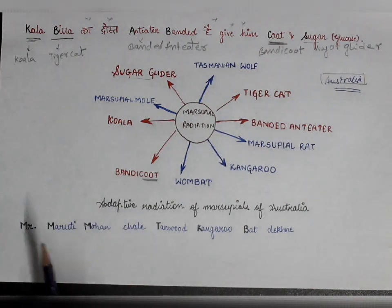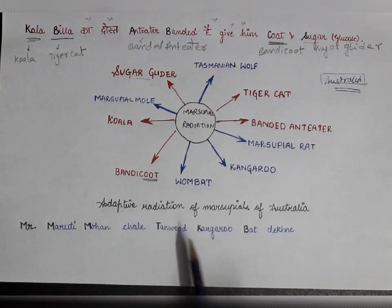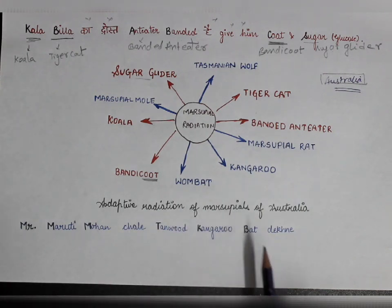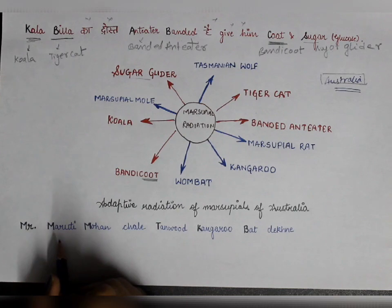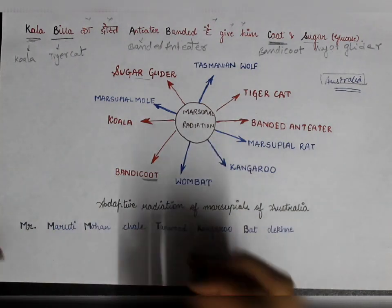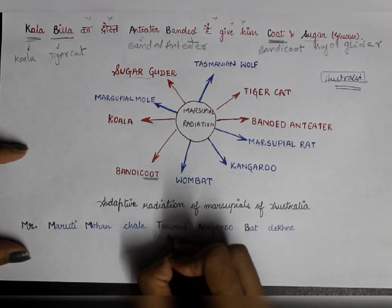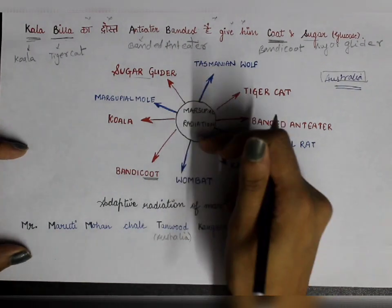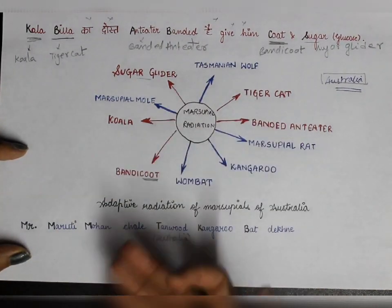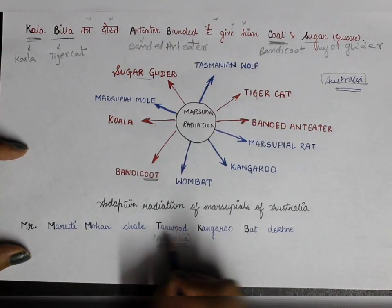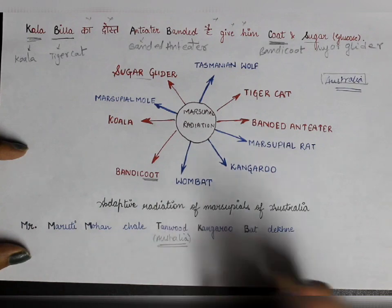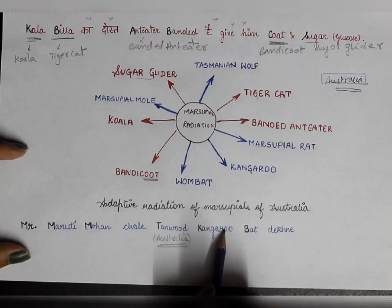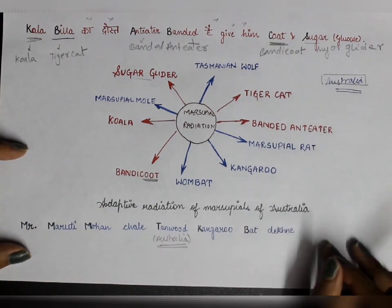The next mnemonic is: 'Mr. Maruti Mohan, Chale Tanwood, Kangaroo bat dekhen.' Maruti Mohan is going to Tanwood. Tanwood is a place in Australia where adaptive radiation in Australia has occurred. So we will talk about a place in Australia — Tanwood. What will he see there? He will see kangaroo and bat.